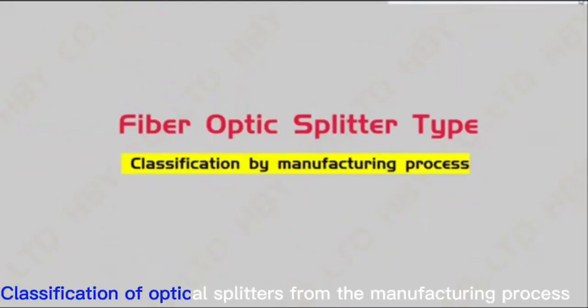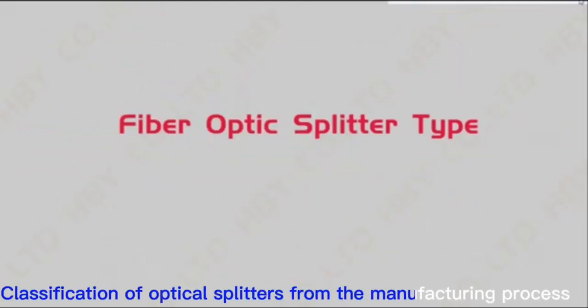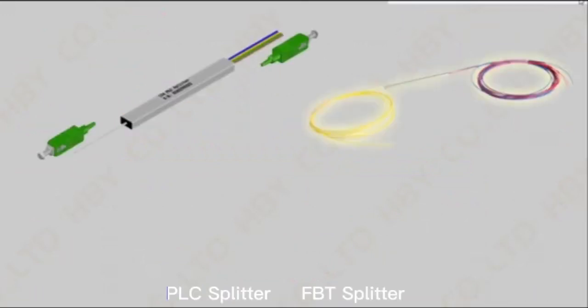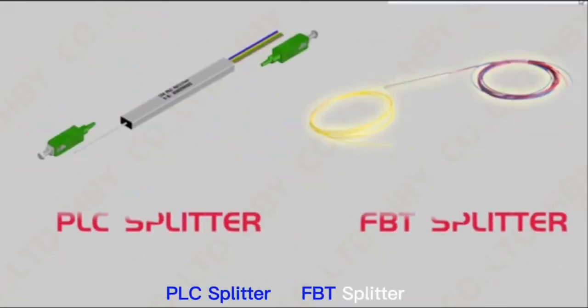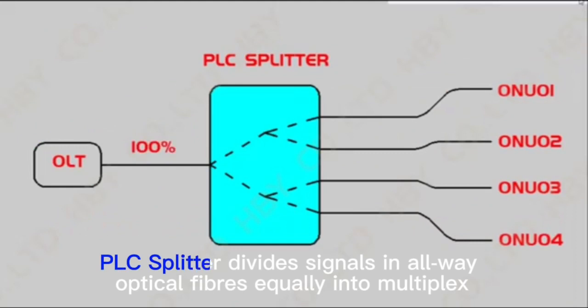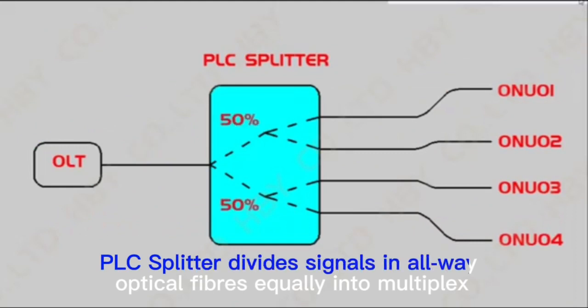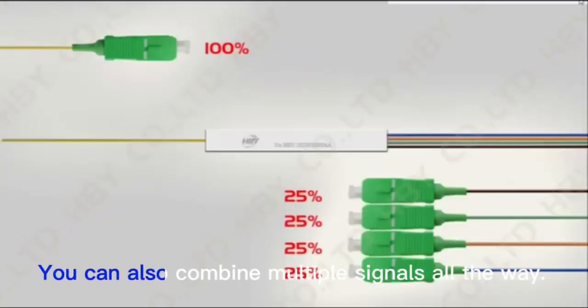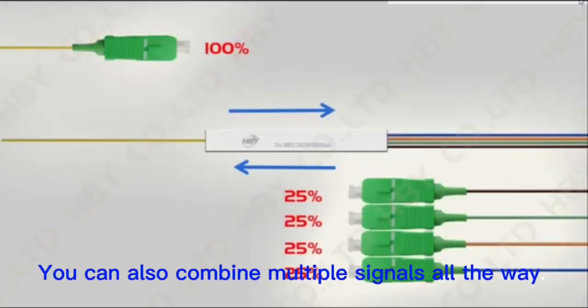Classification of optical splitters from the manufacturing process: PLC splitter and FBT splitter. A PLC splitter divides signals in one optical fiber equally to multiple optical fibers. You can also combine multiple signals into one.